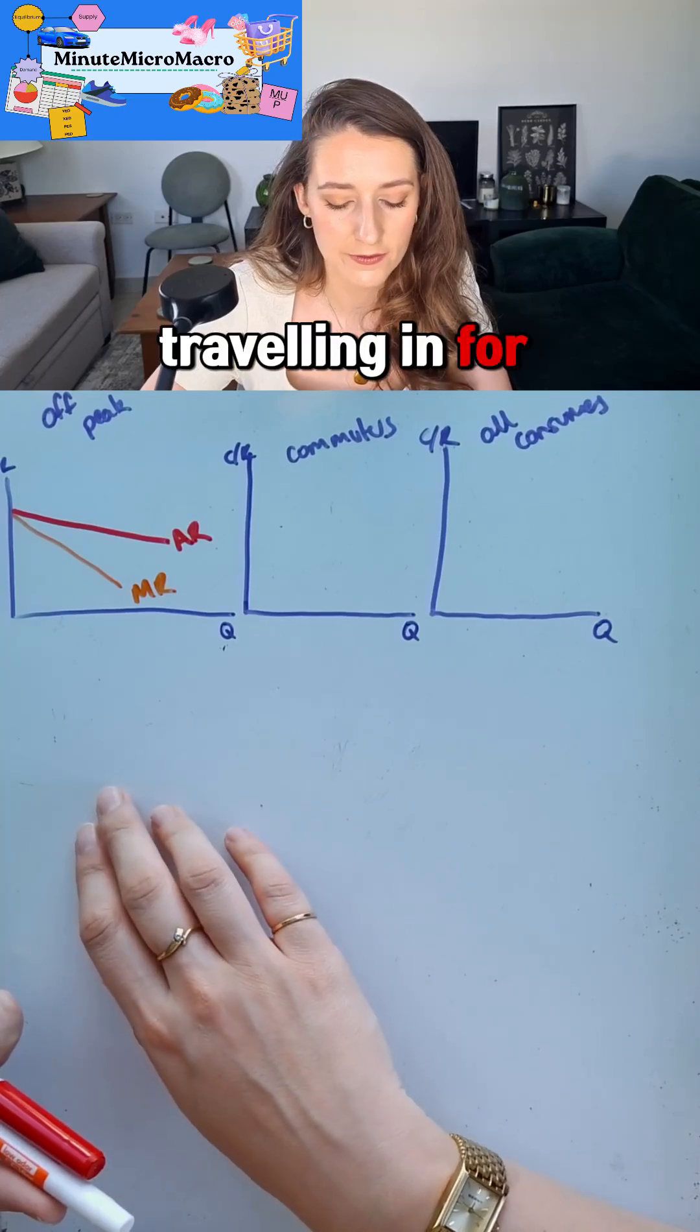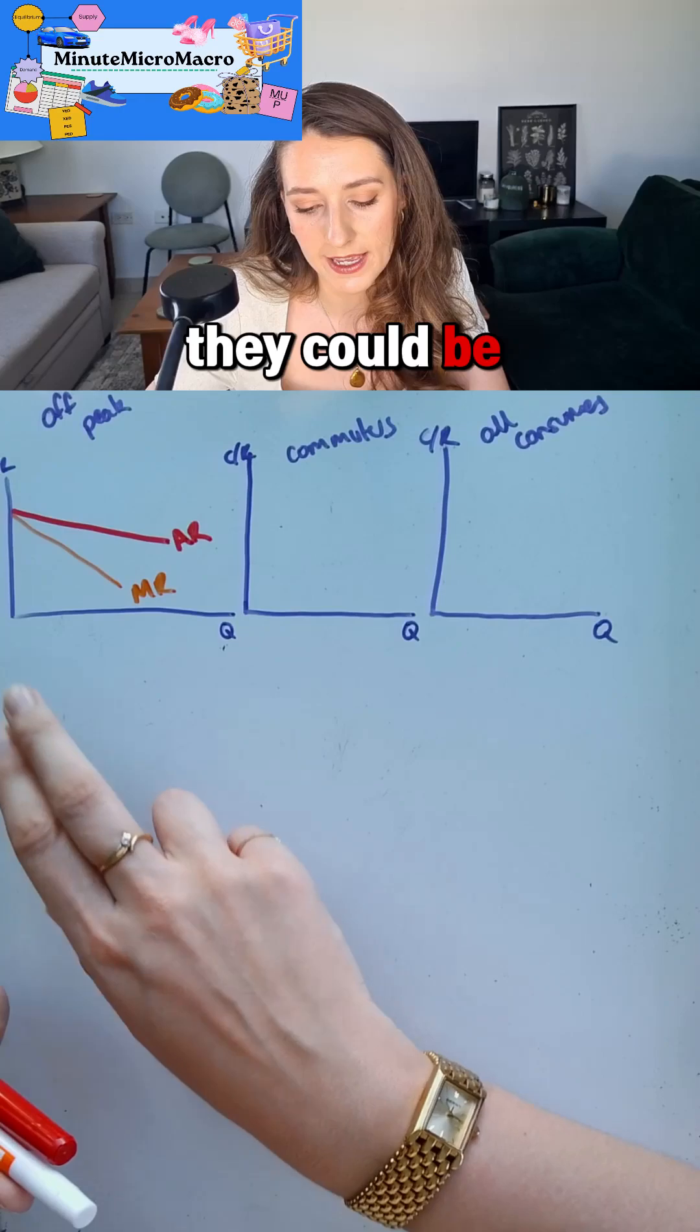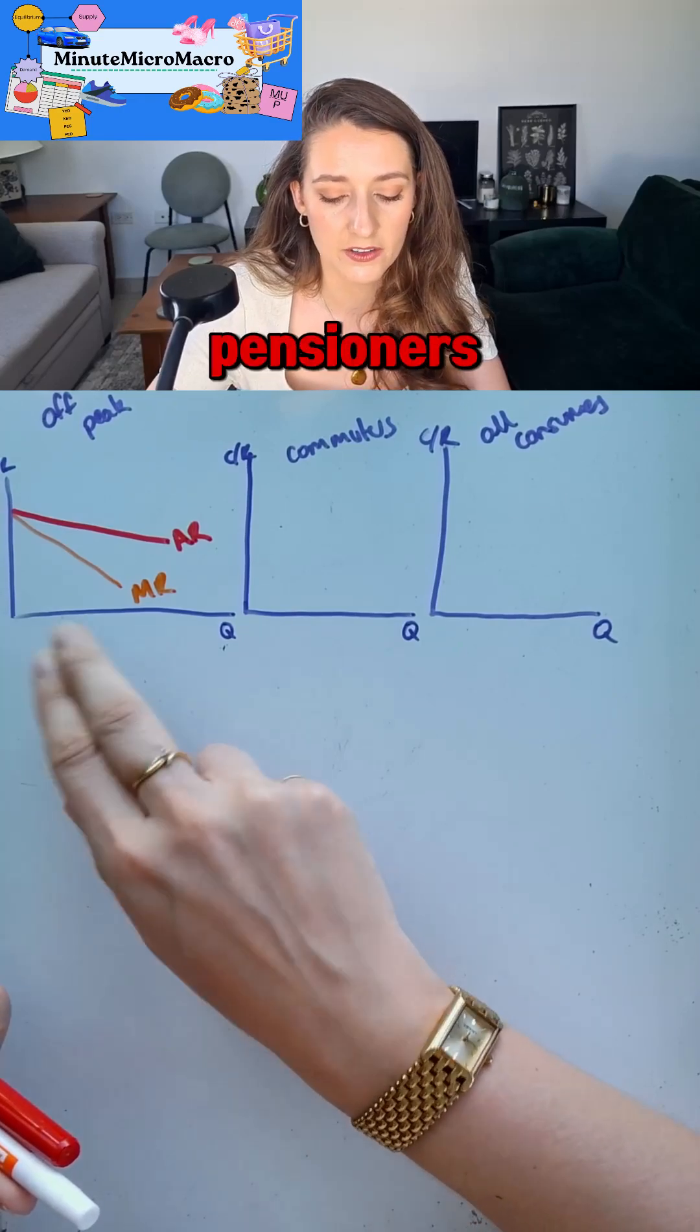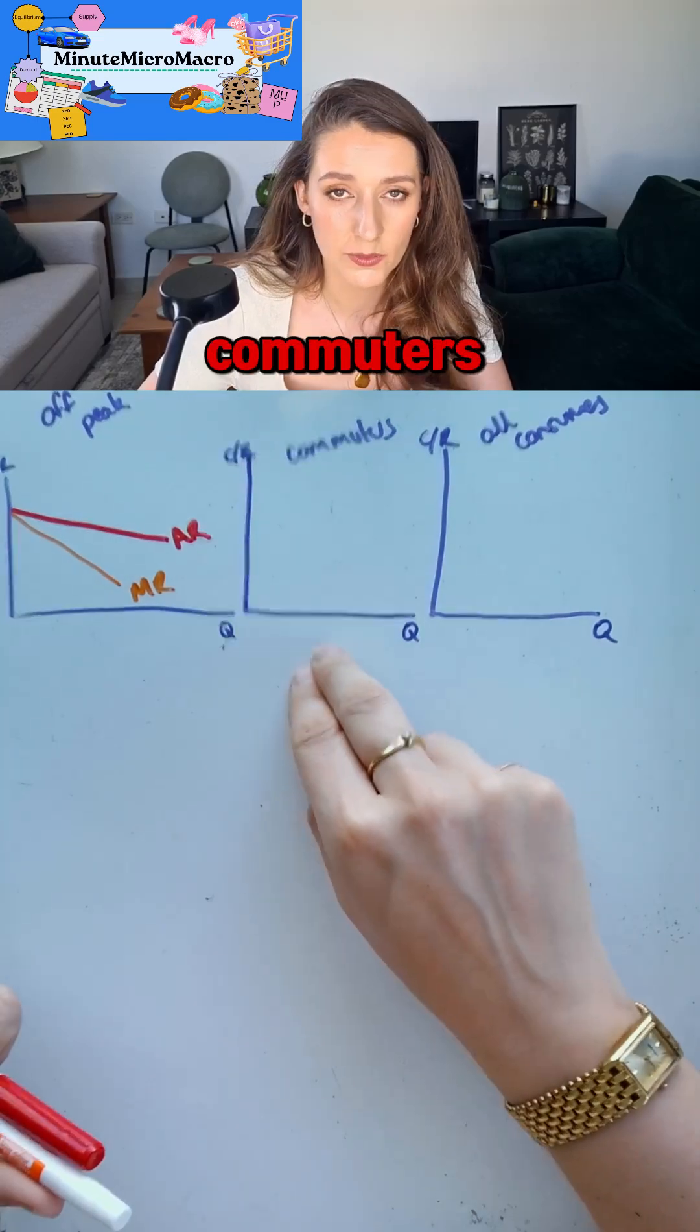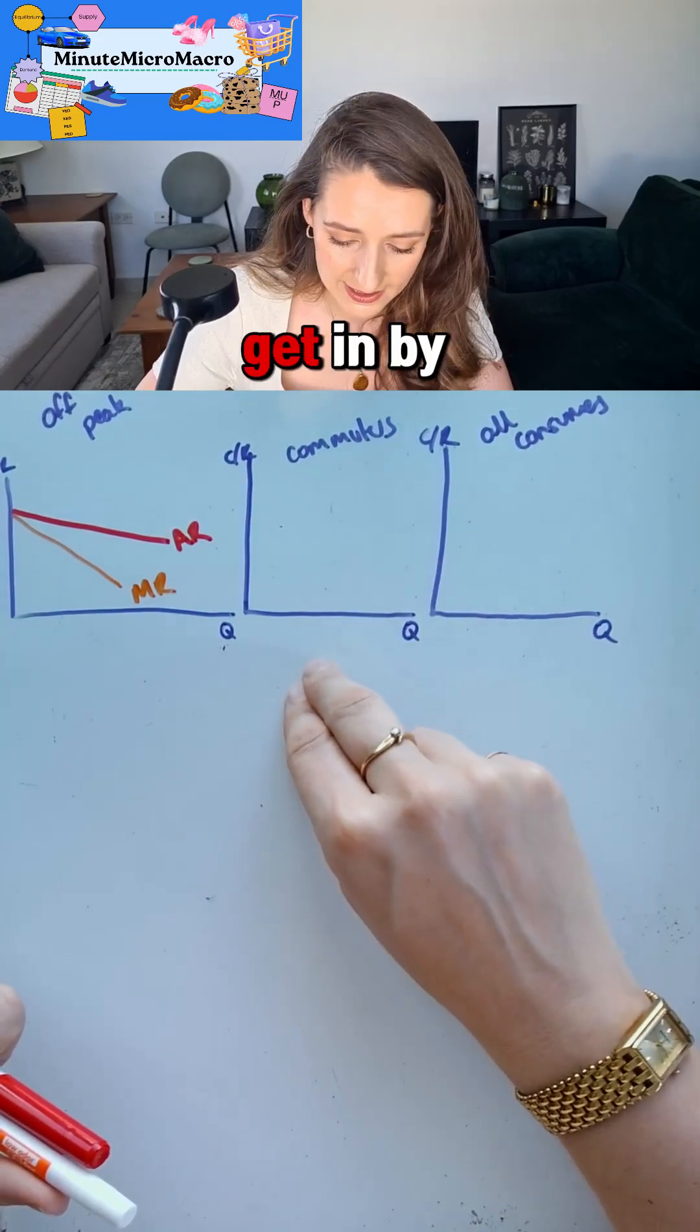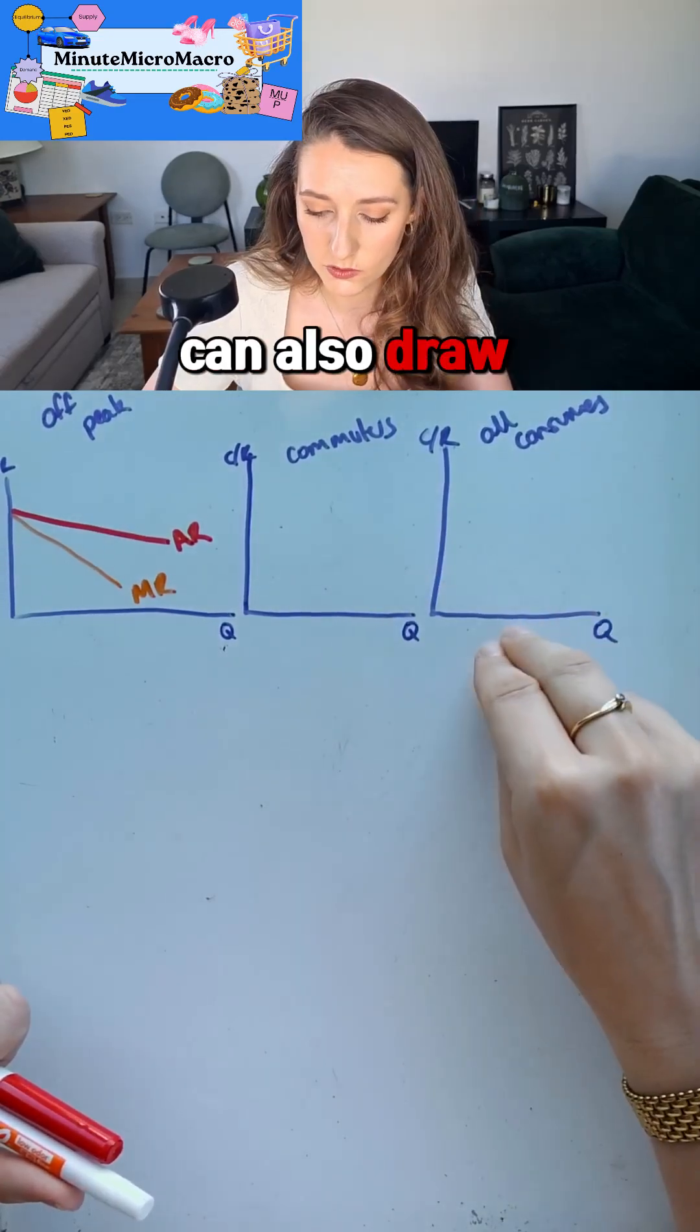These are people who might be traveling in for vacation, they might be traveling during the day, they could be retirees or pensioners who are just going into the city for an afternoon lunch. We then have commuters. These are people who have to get in by a certain time every single day and then we can also draw all consumers.